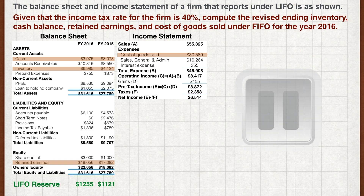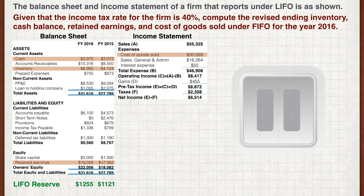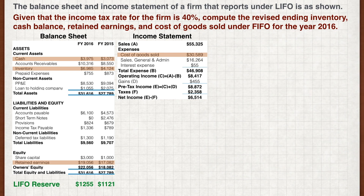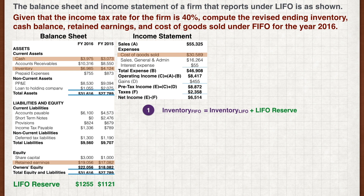Pause the video now and work out your answers. And we're back. Let's run through the four adjustments that we've learned in sequence. Firstly, the FIFO inventory is the LIFO inventory plus the LIFO reserve. Simply plug in the figures, and we have an inventory value of $8,240.